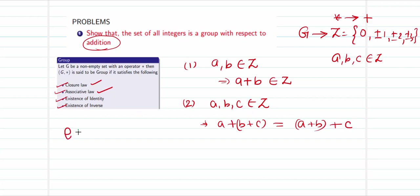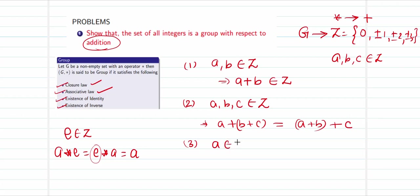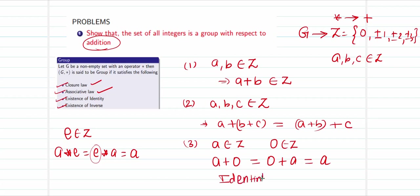The third property is the existence of identity. An identity element e belongs to the set and satisfies the property that for any element a, a * e = e * a = a — acting like a mirror. In the set of integers, there is an element 0 that also belongs to Z, such that a + 0 = 0 + a = a. So the identity element exists and is 0.